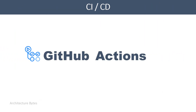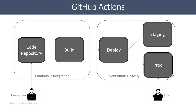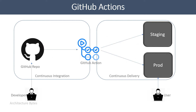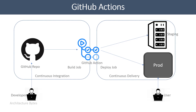Let us see how you would implement a CI/CD pipeline with GitHub Actions. The source in this case would of course be a GitHub repository. To build and deploy, you have GitHub Actions. GitHub Actions are YAML files, and you may be deploying to one or more environments.